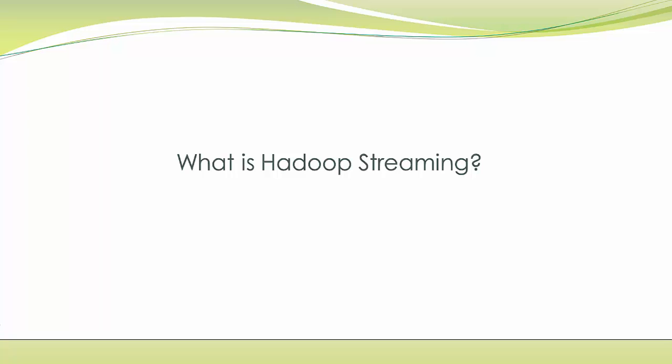Before jumping to the examples, let's understand Hadoop Streaming. Hadoop Streaming is a utility that comes with the Hadoop distribution — a feature that allows developers to write MapReduce applications using languages like Perl, Python, Ruby, etc. It can be any language that can read from standard input and write to standard output. Even though the Hadoop framework is written in Java, programs for Hadoop do not need to be coded in Java. Hadoop Streaming has been available since Hadoop version 0.14.1.